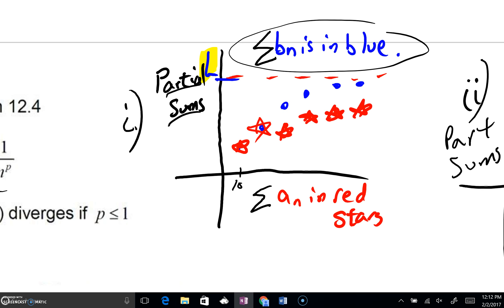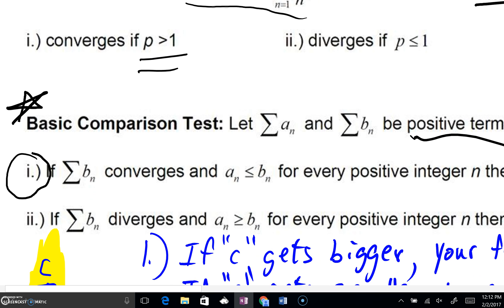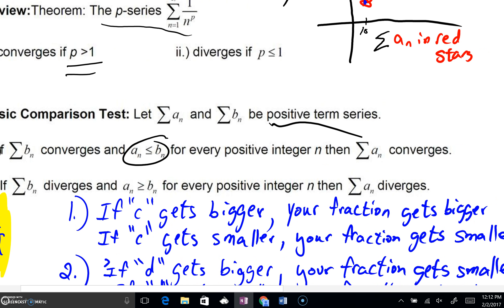Again, what did we just see? We're seeing that if you have a convergent series B sub n, and you were told that A sub n was smaller than B sub n term by term, that means this series A sub n must converge as well.